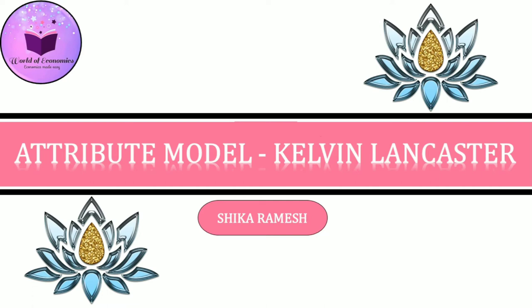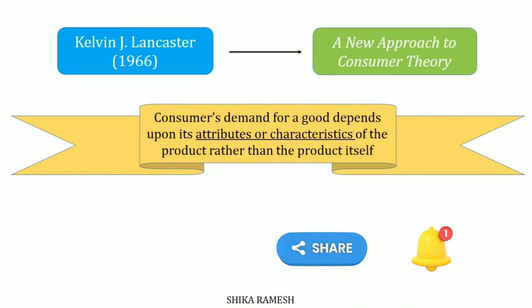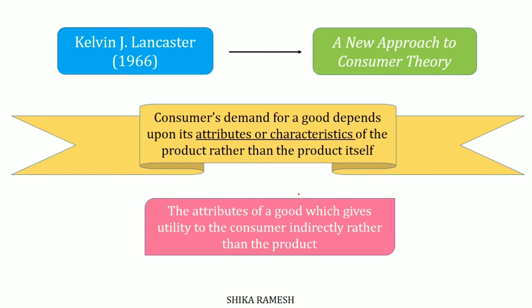Hello friends, in today's video we shall go through Kelvin Lancaster's attribute model or characteristic model. Kelvin J. Lancaster gave his theory in 1966 in his paper, 'A New Approach to Consumer Theory.' He mainly signified that a consumer's demand for a good depends upon its attributes or characteristics of the product rather than the product itself. Lancaster emphasizes the characteristics of the product as paving the way for the demand of that product, which is why his model is also named the attribute model or characteristic model.